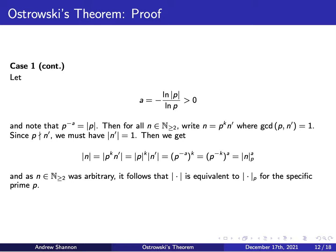Let a equal negative log of the absolute value of p over log p. Note that a is greater than zero since absolute value of p is less than one, and we can use algebra to show that p to the negative a equals absolute value of p. Then for all natural numbers greater than or equal to two, write n equal to p to the k times n prime, where p and n prime are relatively prime. Since p does not divide n prime, its absolute value is exactly one. So the absolute value of n equals the absolute value of p to the k times n prime, which equals absolute value of p to the k times the absolute value of n prime. Rearranging, this equals the p-adic absolute value of n to the a. Since n was an arbitrary natural number greater than two, it follows that double bar is equivalent to double bar sub p for that specific prime p.